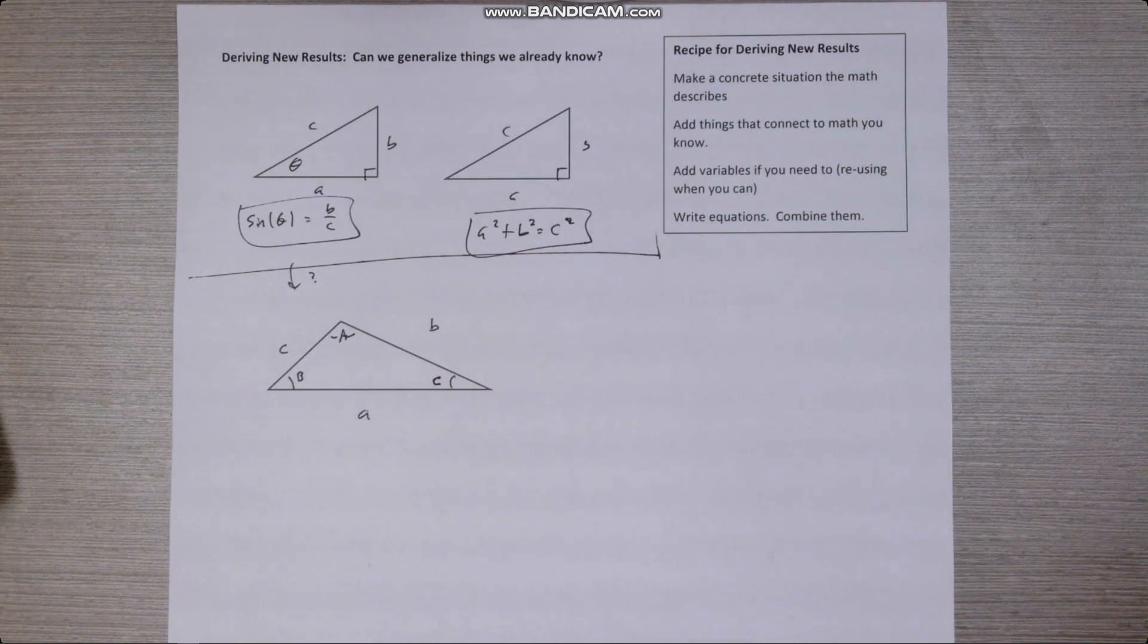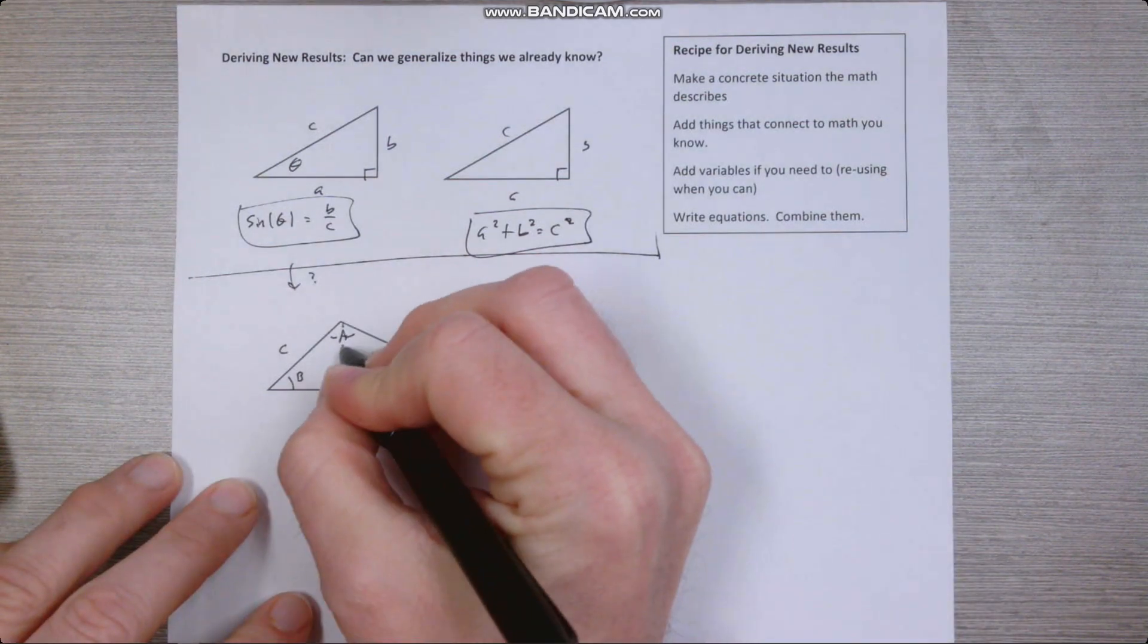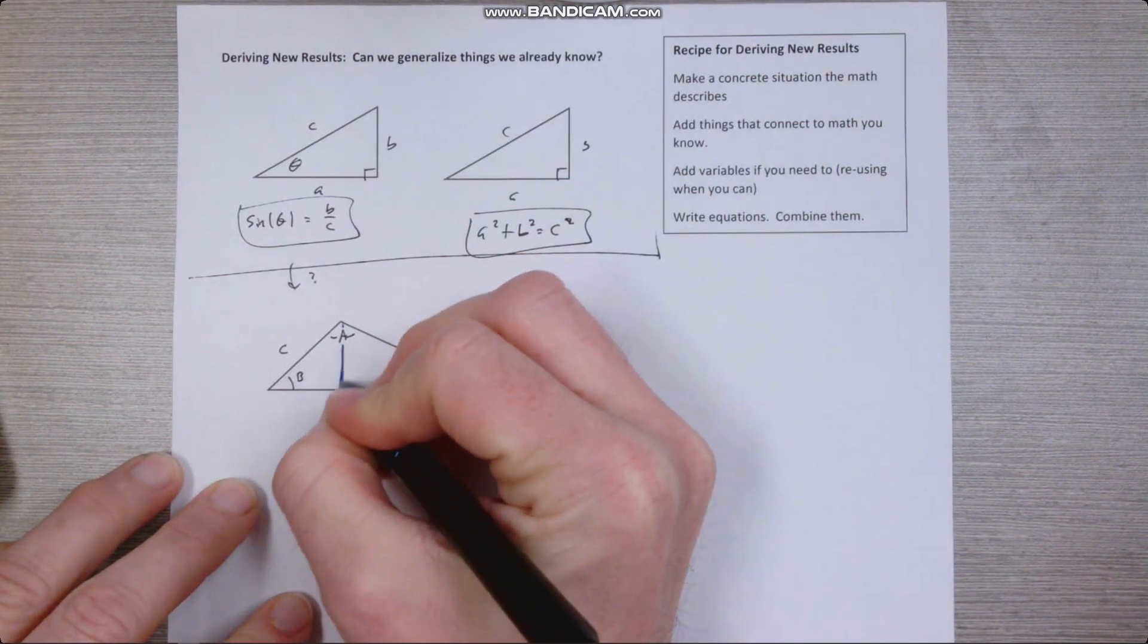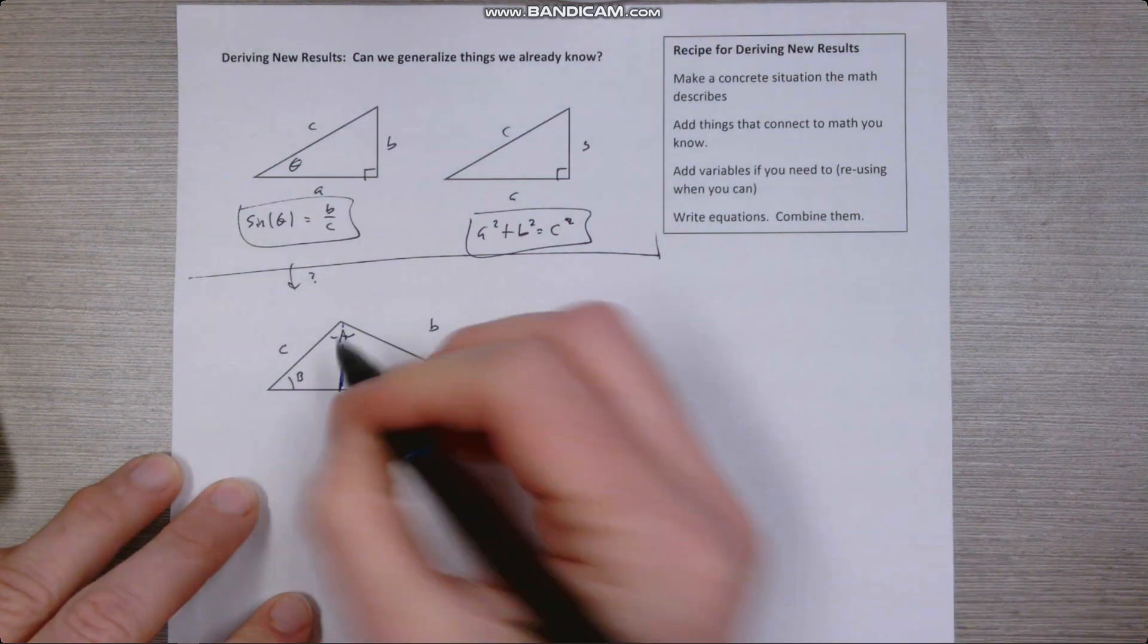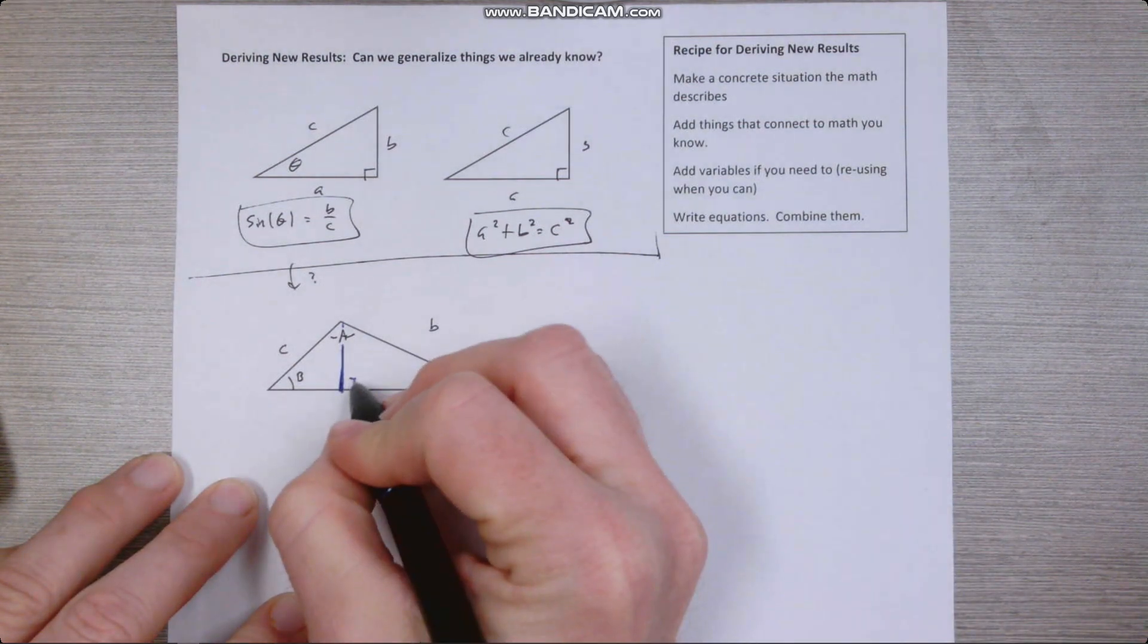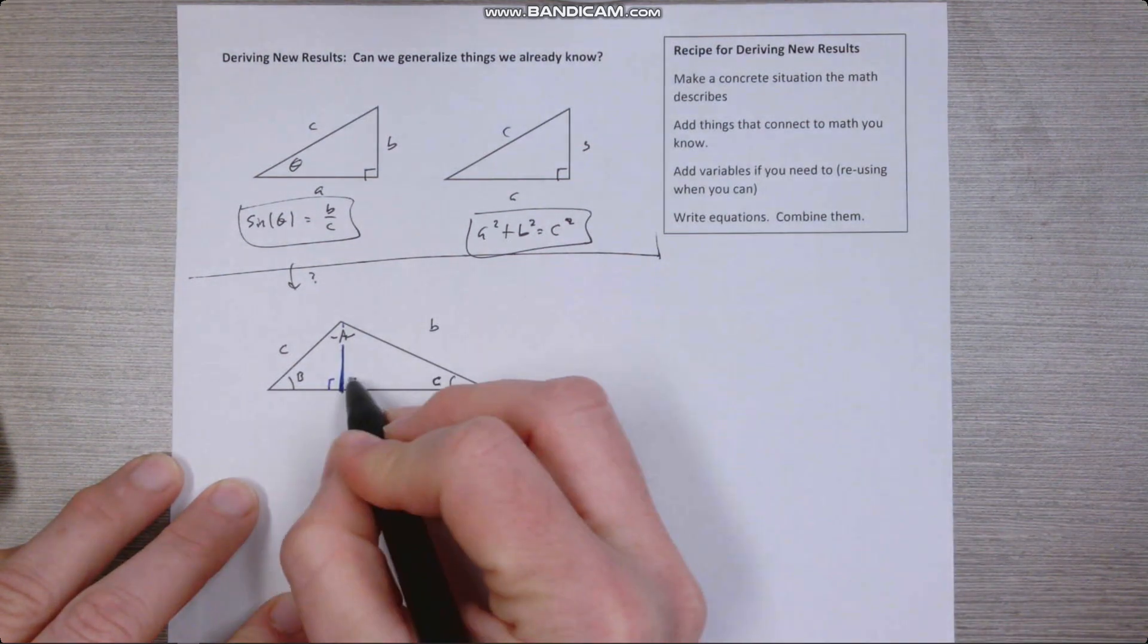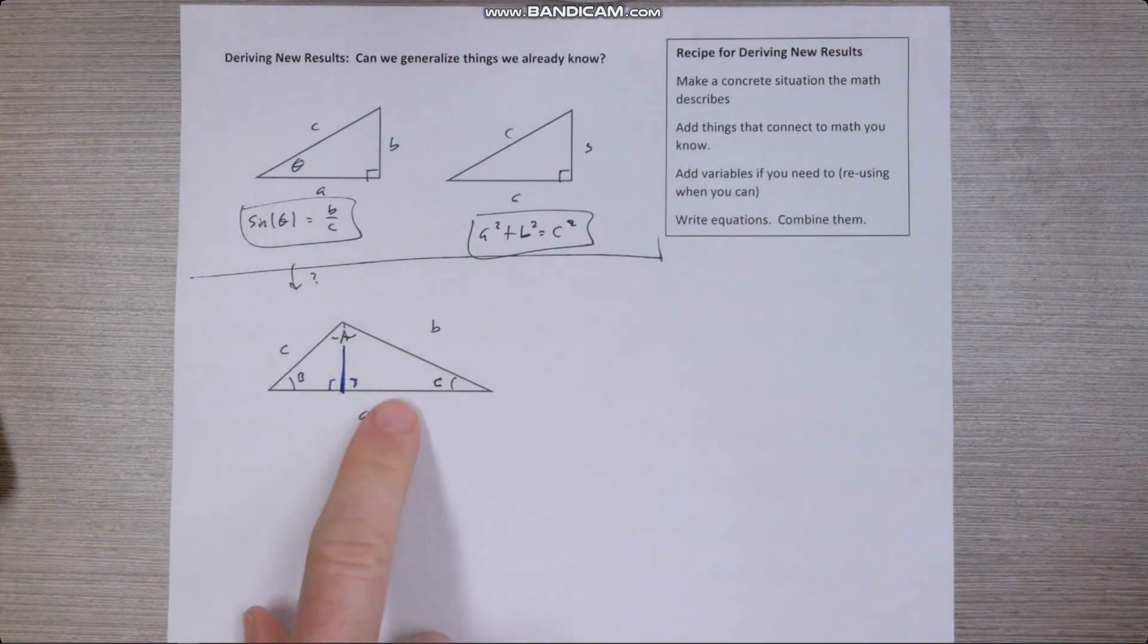A really easy thing that we could do, we do this in a different color would be to drop a vertical line. So now we have two right triangles. And what's great about this is we can apply a lot of math we know about right triangles to the situation.